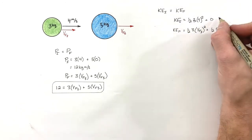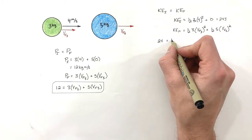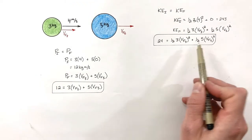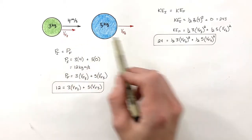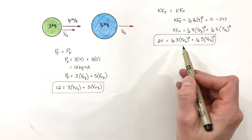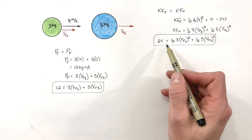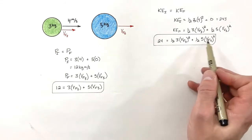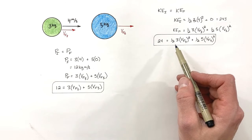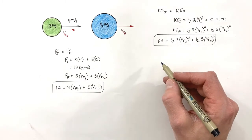One half times three times four squared gives us 24 joules. So we set 24 joules equal to that final kinetic energy expression. Again, we have an equation with two unknowns. But if we stop and think: we now have two equations and two unknowns, and from algebra we know that's solvable. However, working through it is an algebraic nightmare, so to save us from that algebra we're going to use something called the elastic collision equations.